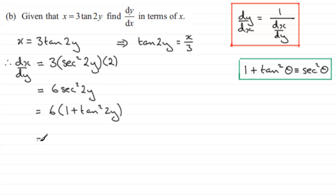So we've got this equals 6 multiplied by, and I'm going to put that in square brackets because I can see I'm going to have brackets within brackets. Tan 2y is x over 3, so I've got x over 3 here and that is all squared. So if I clean this up, I've got 6 multiplied by 1 plus x squared over 9.